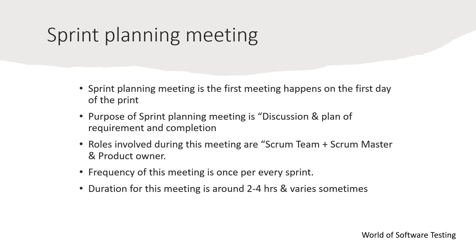The purpose of the sprint planning meeting is discussion and planning of requirements and their completion. The test lead and development lead do resource and job allocation, while the product owner explains the user stories so everyone is on the same page. Roles involved are the scrum team, scrum master, and product owner. Frequency is once per sprint and duration is around two to four hours.